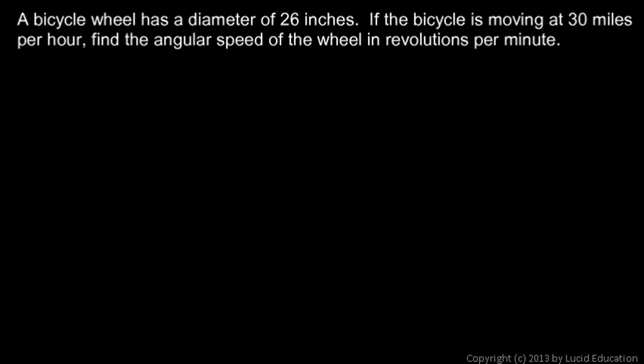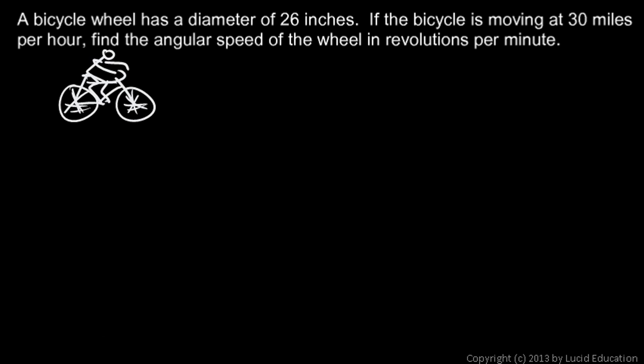I'm going to show you two ways to think about this. We've got this bicycle, and someone's up here pedaling. These wheels are turning, and we're trying to find the angular speed — how many revolutions per minute — the amount of rotation per time. We're told the diameter is 26 inches, so the radius is 13. And the bicycle is moving at 30 miles per hour.